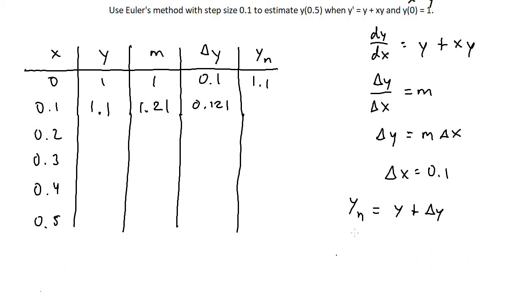Finally, for y new, we can just add the initial y value and the delta y or the change in y. So 1.1 plus 0.121 is going to give you 1.221. I can put that as my new initial y value when x is now 0.2, and then I can repeat this process over until I get to 0.5.